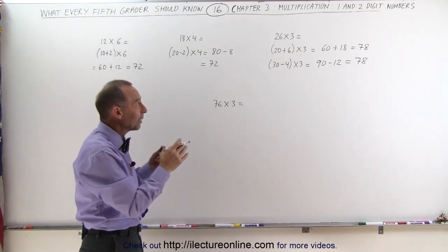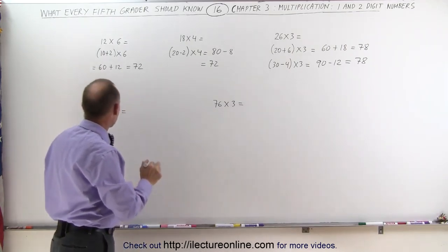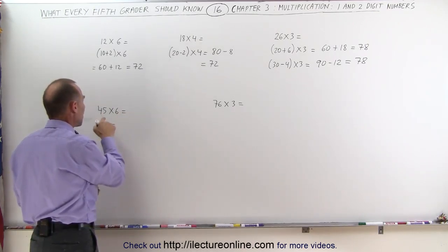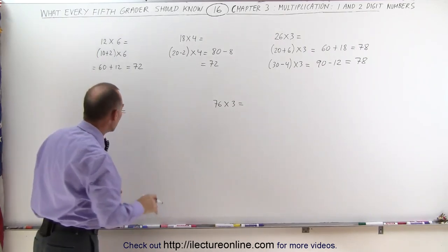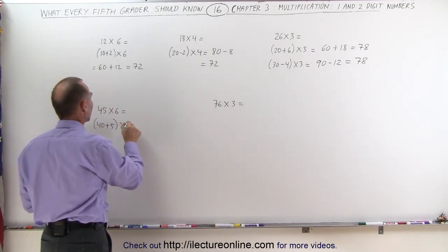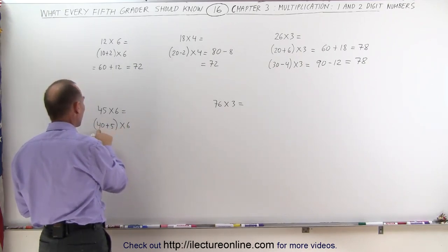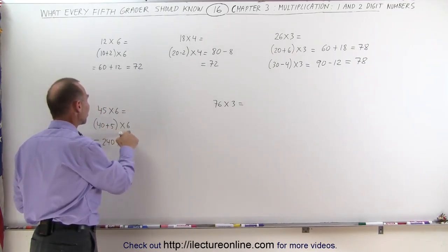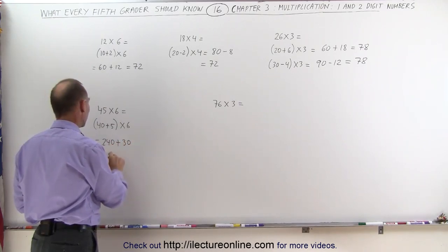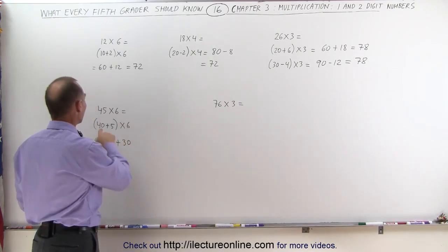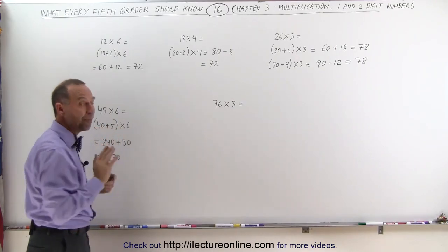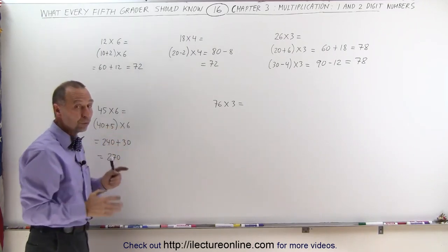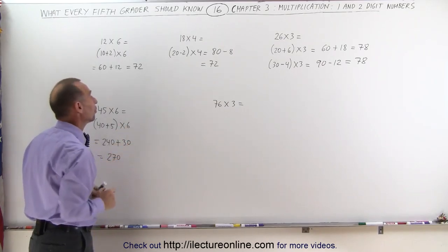So you can see these are the kinds of tricks you think about when multiplying numbers like that. For 45 times 6, I would look at it as 40 plus 5, because multiplying by 5 is always easy. 40 plus 5 times 6 is the same as 40 times 6 plus 5 times 6. Think of 40 times 6 as 4 times 6, which is 24. Add a 0, that makes it 240. Plus 5 times 6 is 30. 240 plus 30 equals 270.